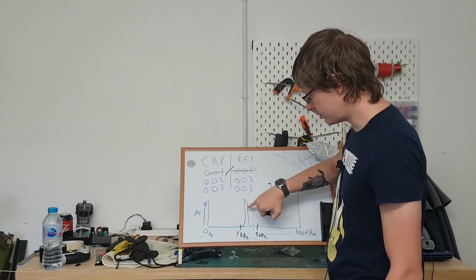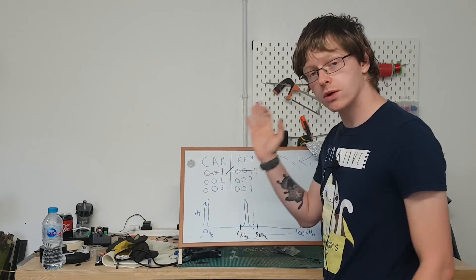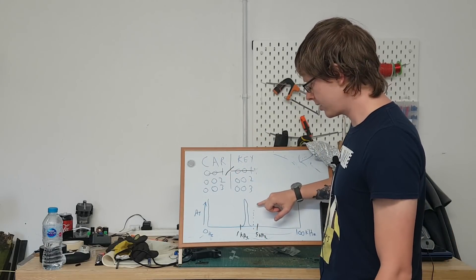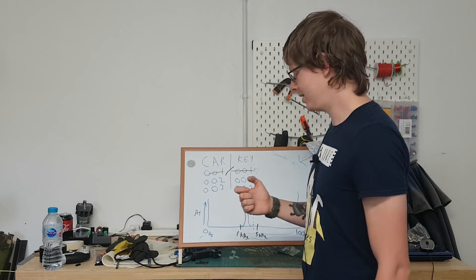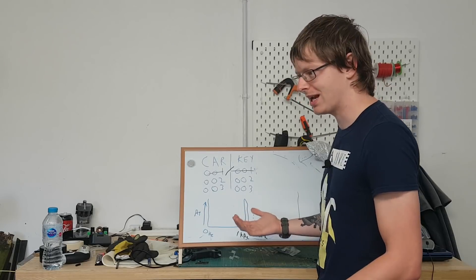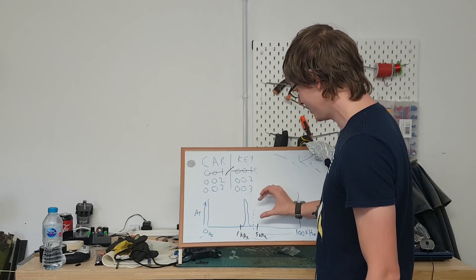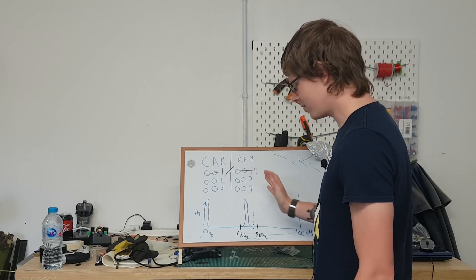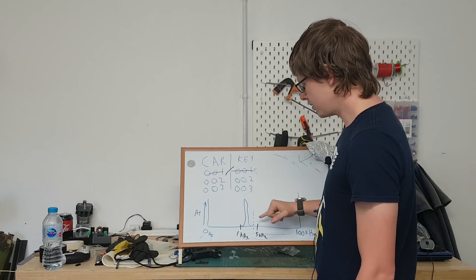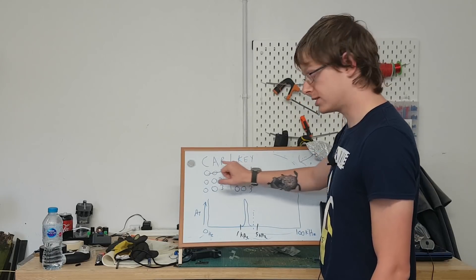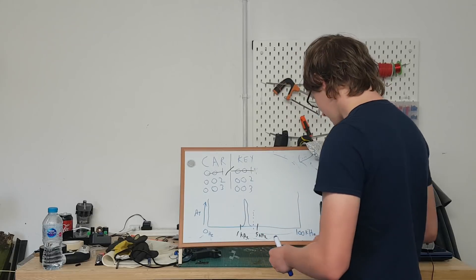Now by the time it's finished looking at this signal and determining okay no that isn't a code to unlock the car, I can ignore it. By the time it works that out, this signal that you've sent from your key fob is gone because radio waves travel at the speed of light. It's very quick. In order to do this quickly you would need to use something like an FPGA, a field programmable gate array, which I'll maybe talk about them in another video. They're very fun. So it's not quick enough to check the two signals at the same time or quickly enough before they disappear.